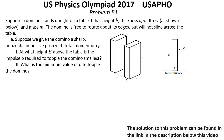Problem B1. Suppose a domino stands upright on a table. It has height h, thickness t, width w, as shown below, and mass m. The domino is free to rotate about its edges, but will not slide across the table.